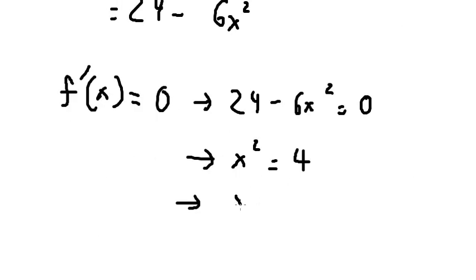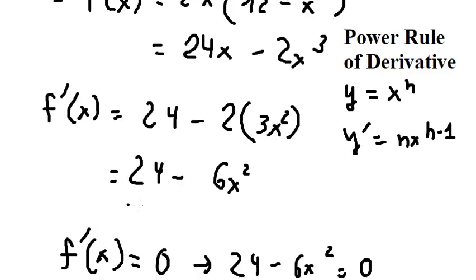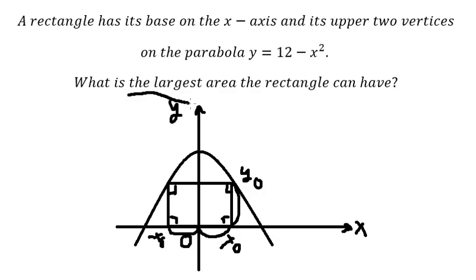We just select x = 2. We take the square root of both sides and we have x = 2. And now we need to find the largest area.